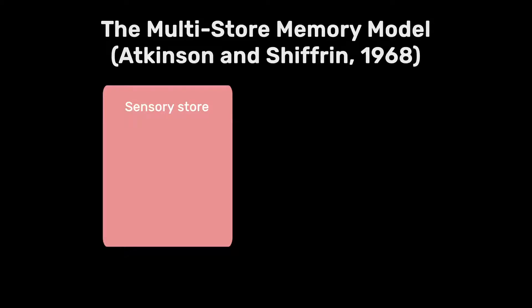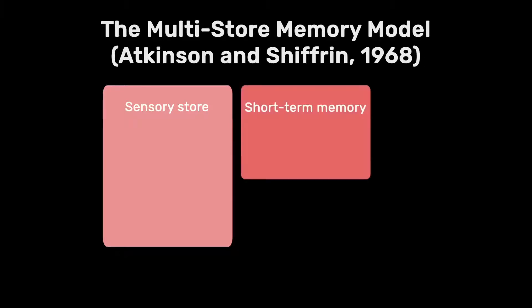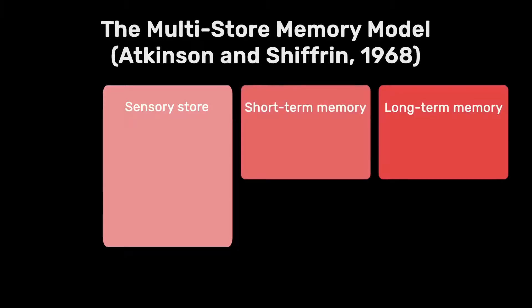And that's how we get to the first component of the multi-store memory model — the first store — which is the sensory stores. So you have three stores in the multi-store memory model: sensory stores, short-term memory, and long-term memory stores.